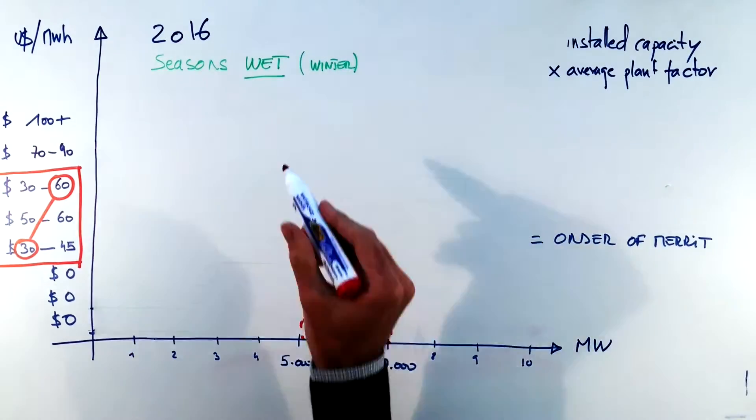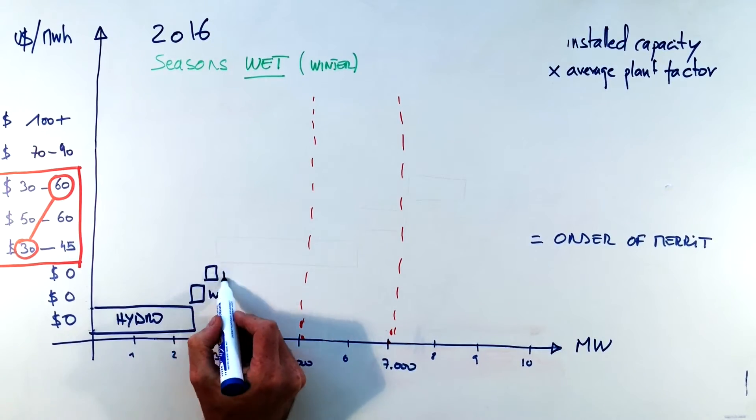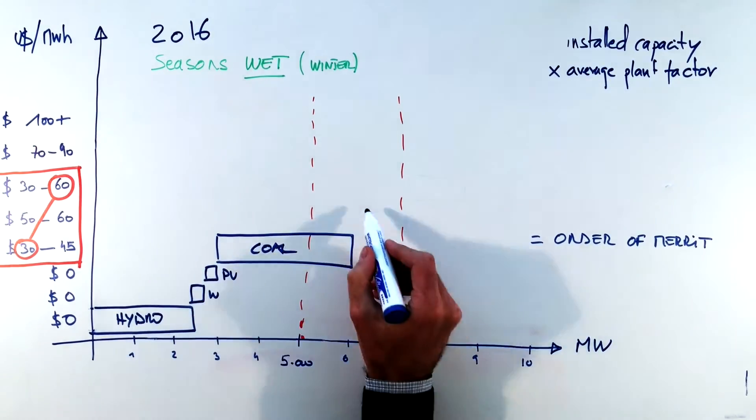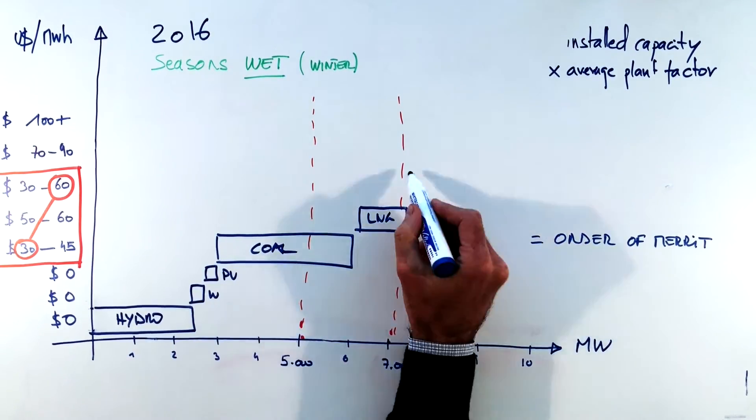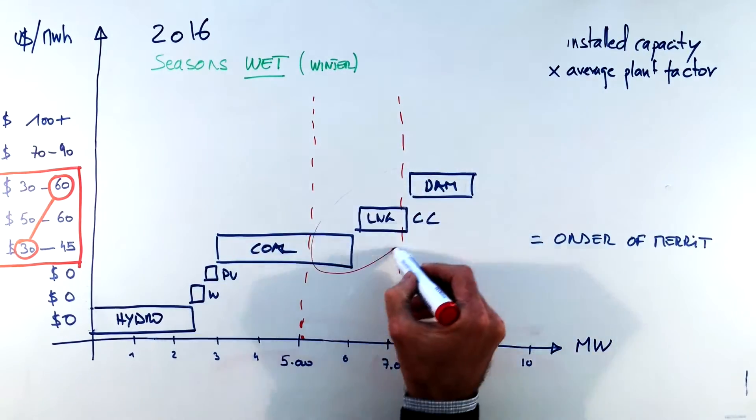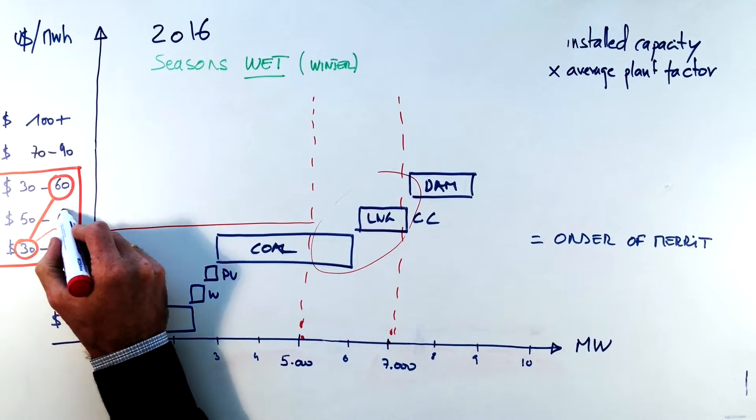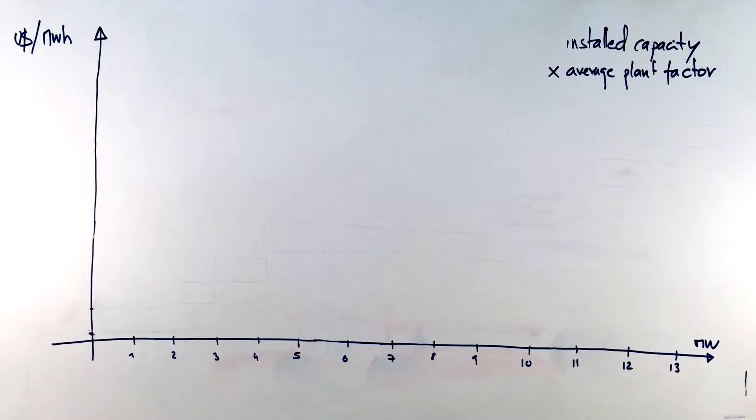In wet years or winter season demand is the same. Here we have 2,500 megawatts of hydro, same PV, same wind, the coal on top, LNG, big dam on top and then obviously the rest of the technology. So here we can see that the prices are going to be oscillating much more between 30 and 60 dollars per megawatt hour.